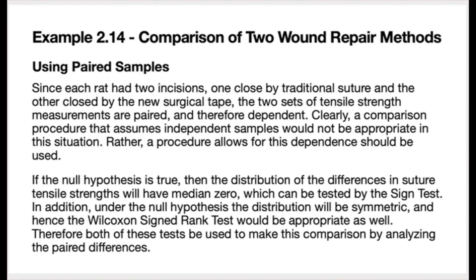Since each rat had two incisions — one closed by traditional suture and one by the new surgical tape — the two sets of tensile strength measurements are paired and therefore dependent. A comparison procedure assuming independent samples would not be appropriate. Rather, a procedure that accounts for this dependence should be used. If the null hypothesis is true, the distribution of differences in suture tensile strengths will have median zero, testable by the sign test. Under the null hypothesis, the distribution will also be symmetric, making the Wilcoxon signed rank test appropriate as well.